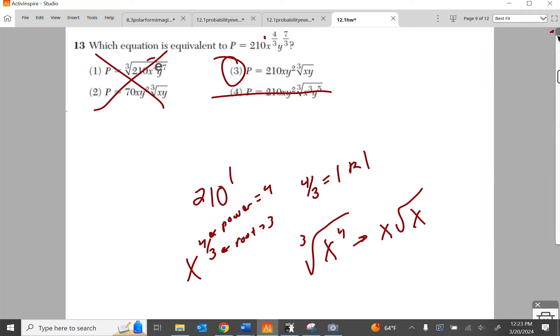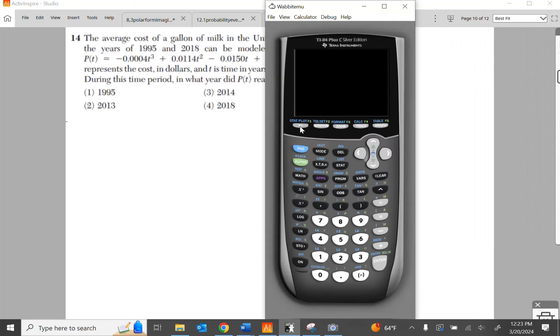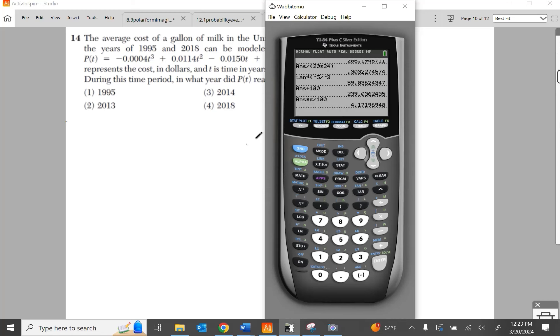I wish this thing would stop hiding. I need to dock that or something. The average cost of a gallon of milk in the United States between the years of 1995 and 2018 can be modeled by the following function. So let's do this the easiest way possible, which is to look at a graph. That's what I say. If you don't know what to do, look at a graph.